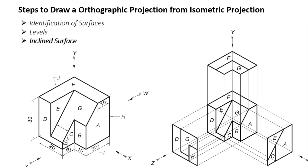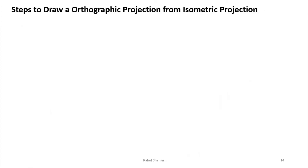For a combined example involving identification, levels, and inclined surfaces: from the X direction as front view, surfaces A, C, and E are visible and appear on the same level. From the top, surfaces F and G are visible — G is inclined but appears adjacent to F. From the side Y direction, surfaces D, G, and B are visible — G appears as a straight line with reduced dimension. Surface G is visible in both side view and top view.